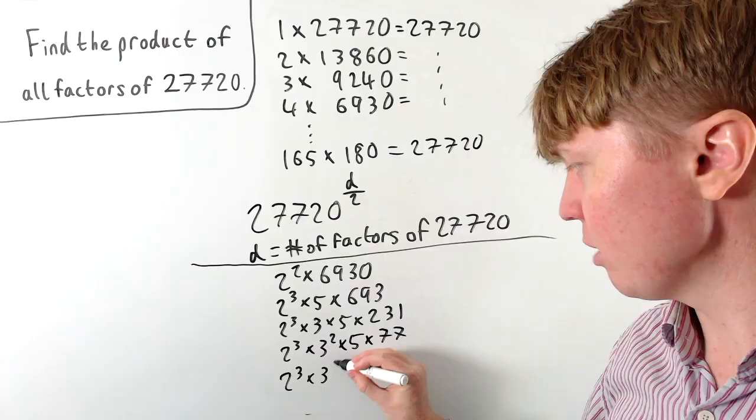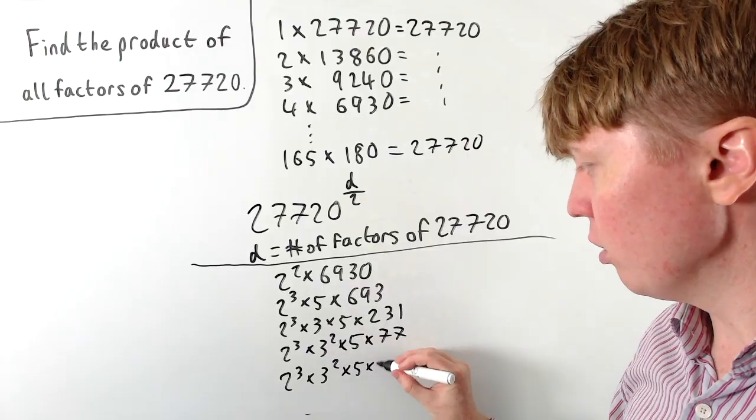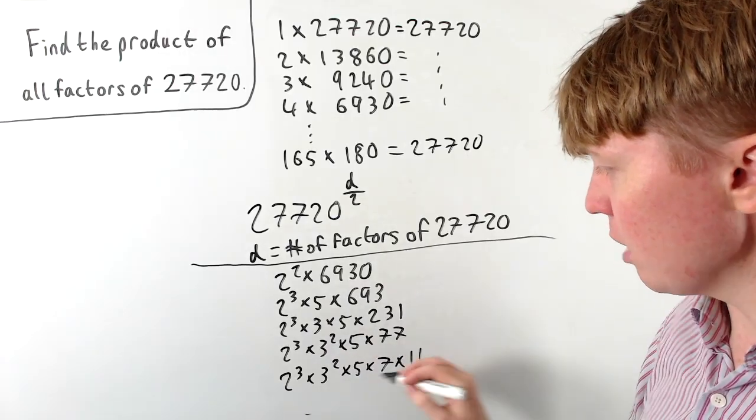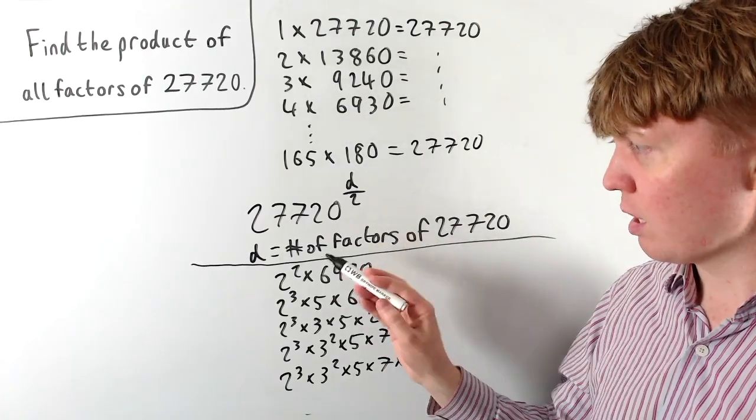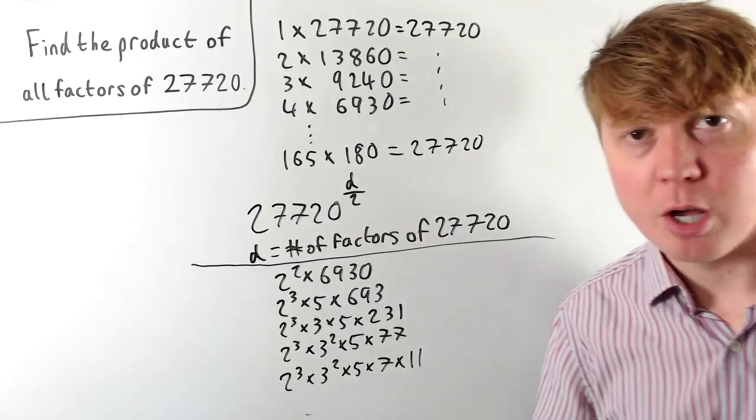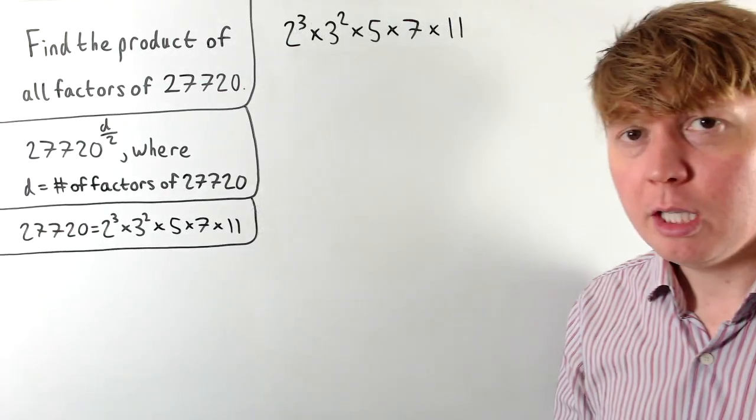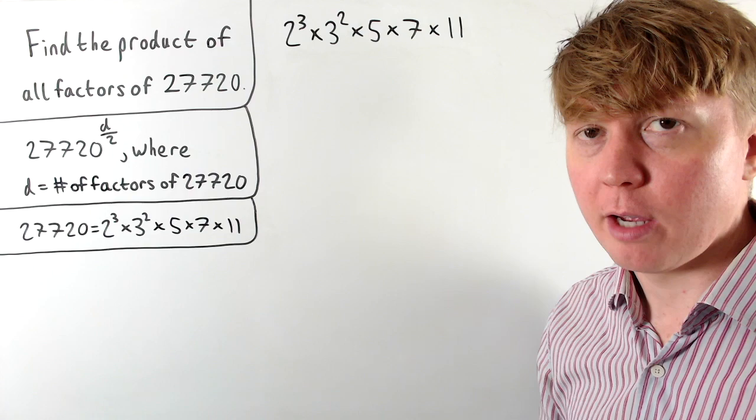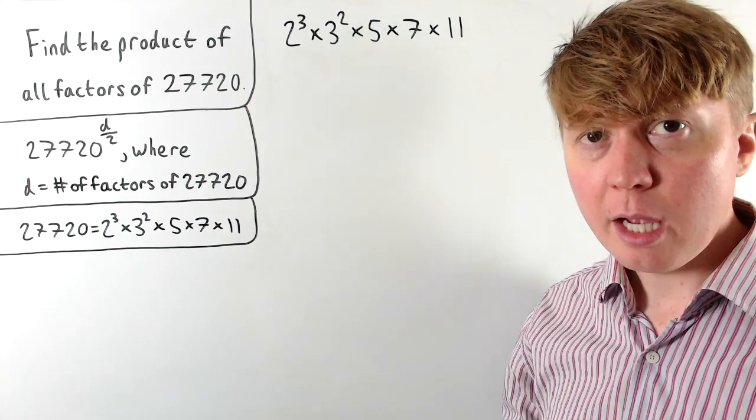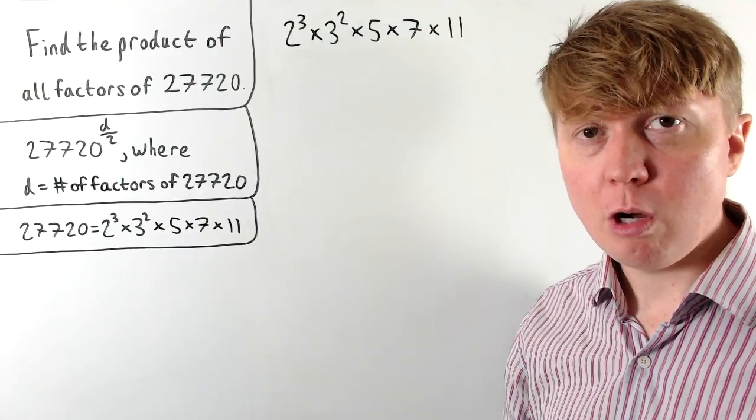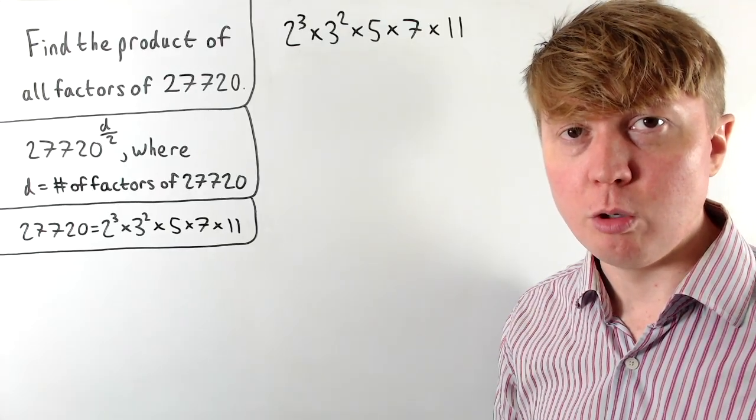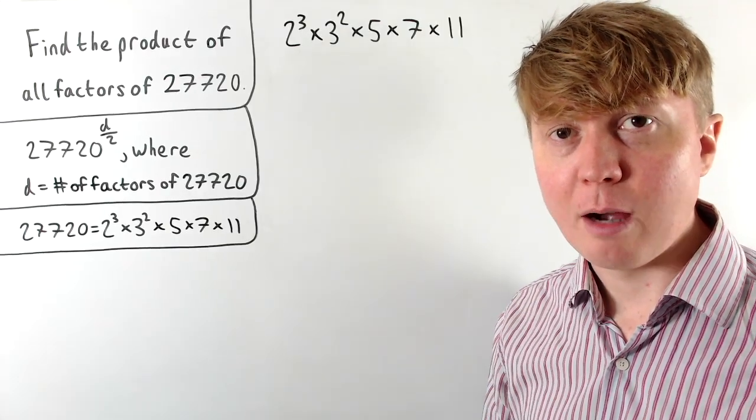So now that we've got the prime factorization of our original number, we'll be able to use this prime factorization to find quite a neat way of calculating the number of factors of our original number. If we think about all the factors of 27,720, they all have to be made up of its prime factors.